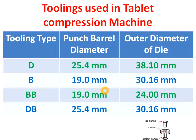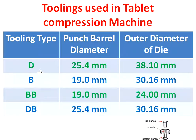Generally four types of tools are used for making a tablet in a tablet compression machine. The first type is D tooling, second type is B tooling, third type is BB tooling, and fourth type is DB tooling. Out of these four types, D type tooling is the most heaviest type of tooling, used for making bigger size tablets. B and BB type toolings are lighter toolings used for making smaller size tablets, and DB tooling is a combination of D and B.